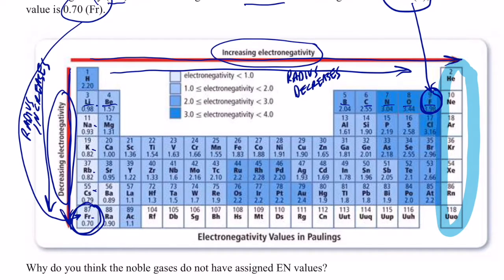The electrons we're trying to attract are farther and farther away from that positive nucleus. There's all sorts of shielding going on as we gain energy levels, so it becomes more and more difficult for atoms with a larger radius to attract electrons in a bond. Atomic radius is the most important of all periodic properties, and we talked about it when discussing all other periodic properties because the radius of an atom determines many of these other properties.